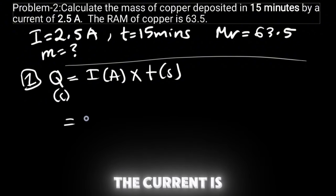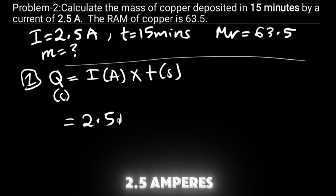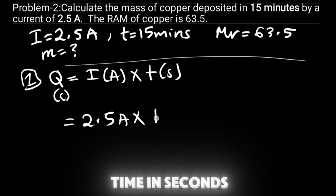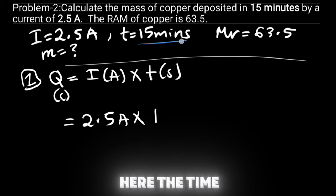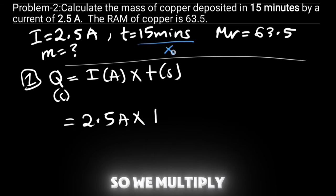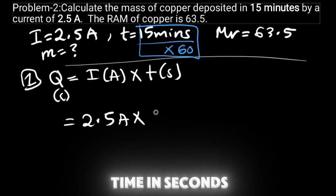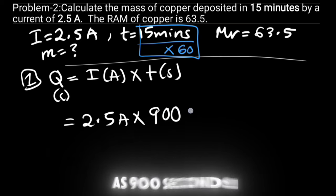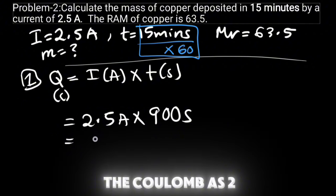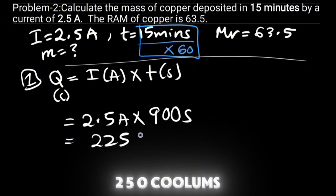The current is 2.5 amperes multiplied by the time in seconds. We are given here the time in minutes, so we will multiply this by 60. When you multiply this by 60, you will get your time in seconds as 900 seconds. Now calculate this - you'll get here the coulomb as 2250 coulombs.